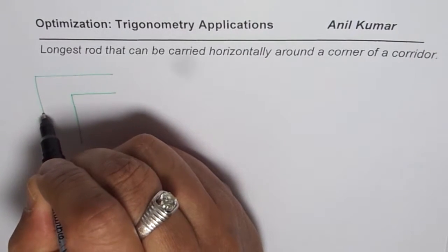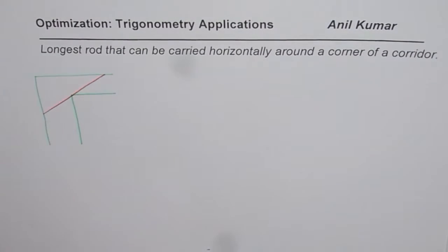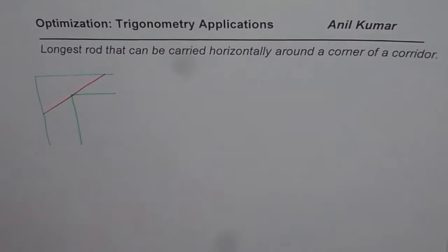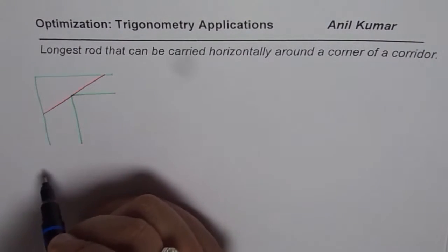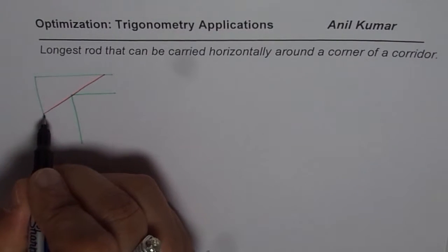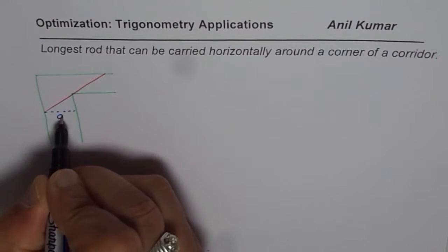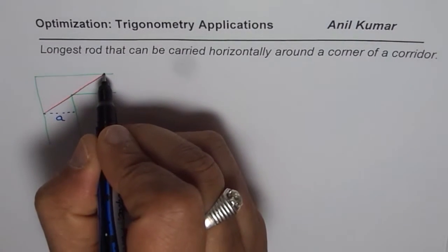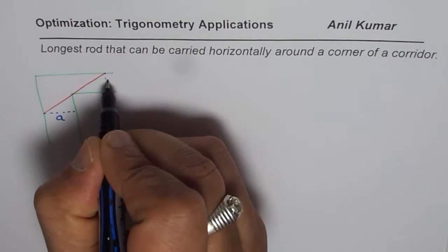At this turn the longest rod could be constrained by the widths of these corridors. Let us make a sketch: that is the rod which is the longest that can be carried through this corner. So how to find the length of this rod — that is the question for us. We will consider the width of one corridor as 'a' and the width of the other corridor as 'b'.